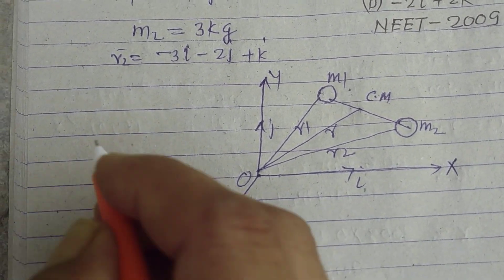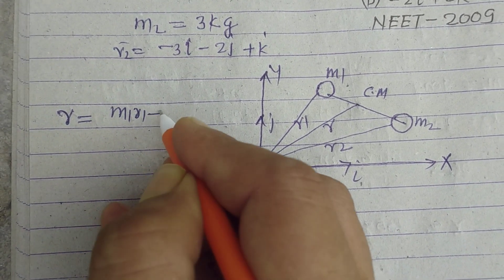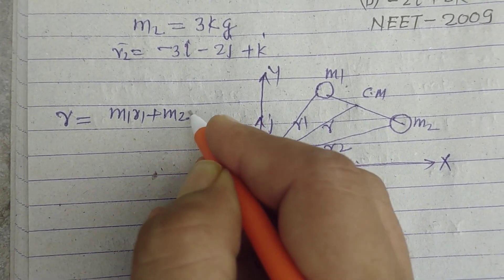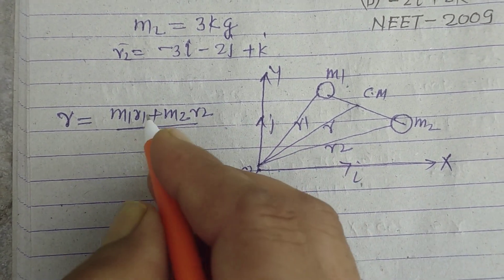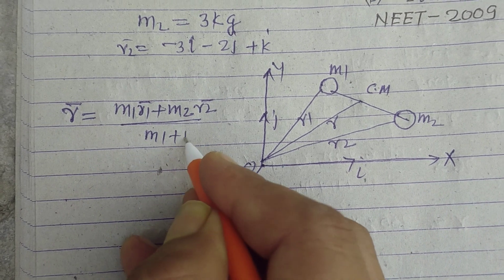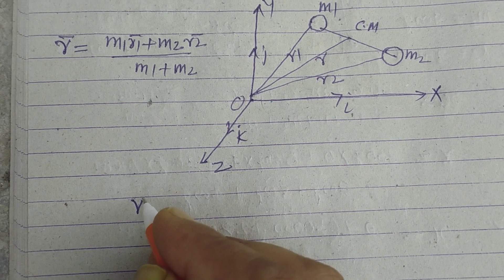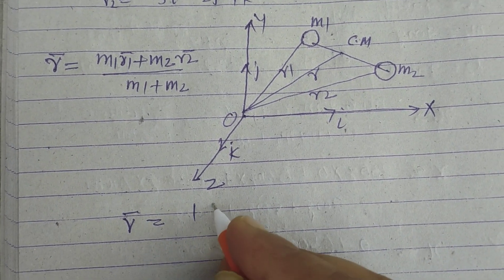So r equals m1·r1 plus m2·r2 over m1 plus m2. This is the formula of position vector of center of mass.